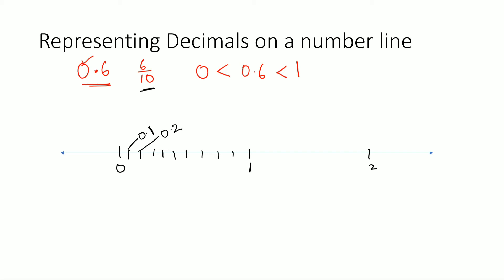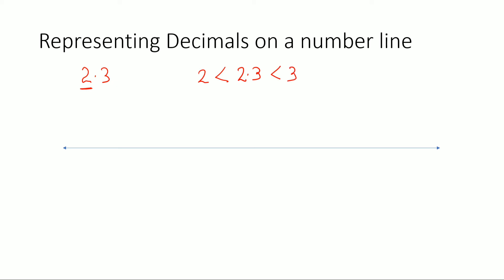Let's take one more example, say 2.3. Here we have 2 in the ones place, so that means 2.3 lies between 2 and 3.